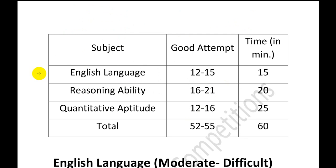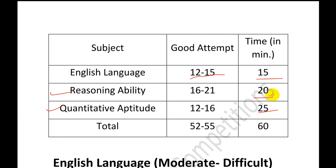English is considered the most difficult part in this paper — a good attempt would be around 12 to 15 questions with 12 to 15 minutes allocated. For the reasoning ability section, a good attempt would be 16 to 21 questions in approximately 20 minutes. For quantitative aptitude, around 12 to 16 questions in about 25 minutes. A total of approximately 52 attempts would lead you to success in the prelims.